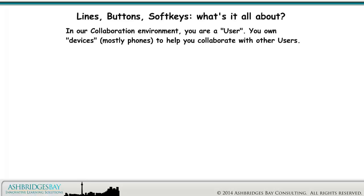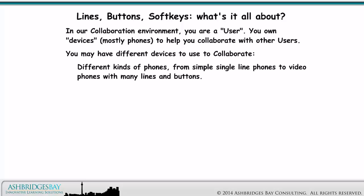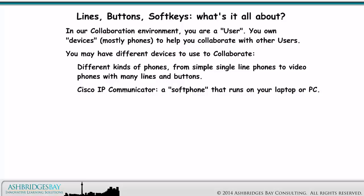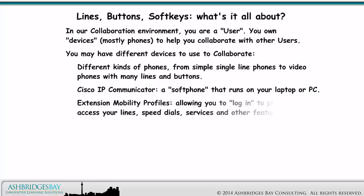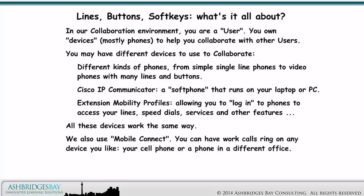In our collaboration environment, you are a user. You own devices, mostly phones, to help you collaborate with other users. You may have different kinds of phones, from simple single-line phones to video phones with many lines and buttons. Cisco IP Communicator is a soft phone that runs on your laptop or PC. Extension mobility profiles allow you to log into phones to access your lines, speed dials, services, and other features. We also use Mobile Connect — you can have work calls ring on any device you like, your cell phone, or a phone in a different office.